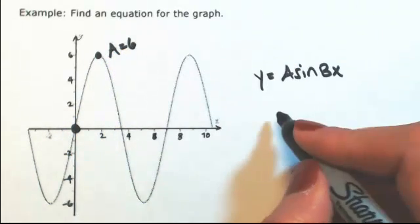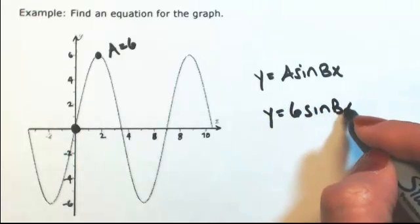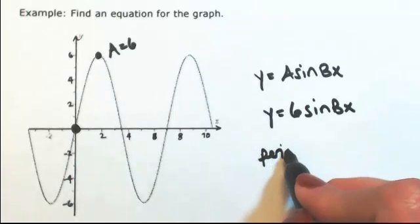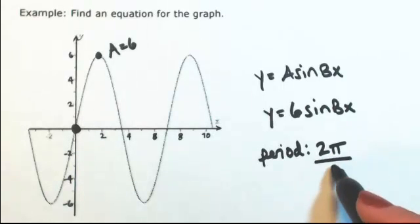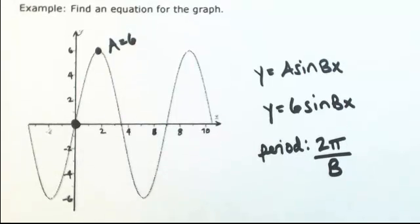The next thing I need to figure out is, what is the b? So right now we have 6 sine bx. Now b is determined by the period. Period is found by taking the original period of, in this case, sine, which is 2π, divided by b. So I need to find the period of this curve.